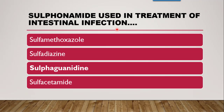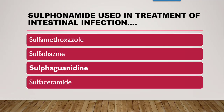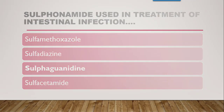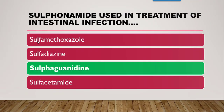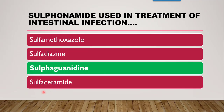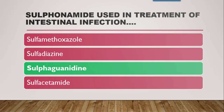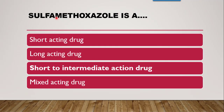Next question: the sulfonamide used in treatment of intestinal infection — sulfamethoxazole, sulfadiazine, sulfacetamide, or sulfaguanidine? The correct answer is sulfaguanidine, based on classification of sulfonamides. Sulfacetamide is used in eye infection. Additionally, sulfamethoxazole is classified as a short to intermediate acting drug.